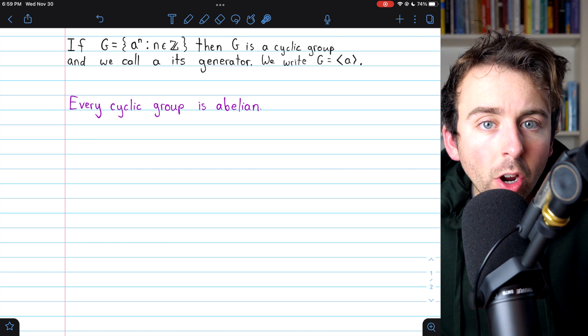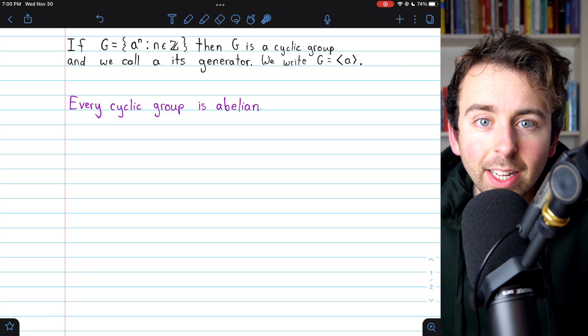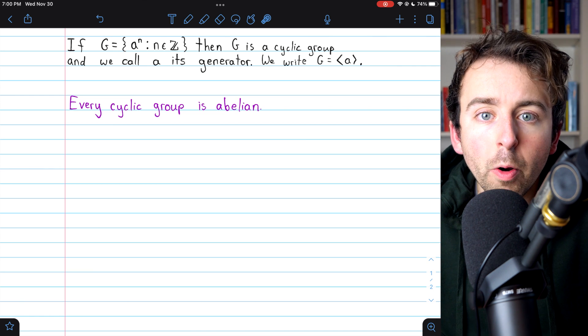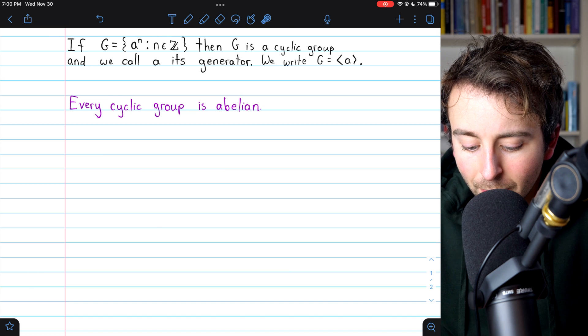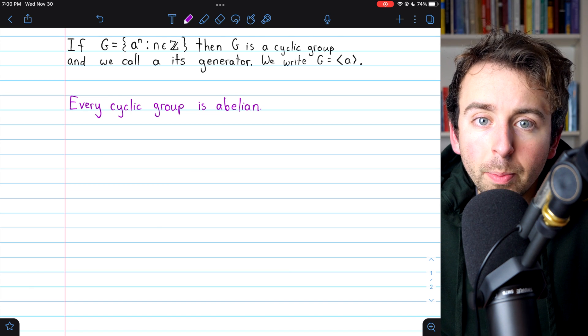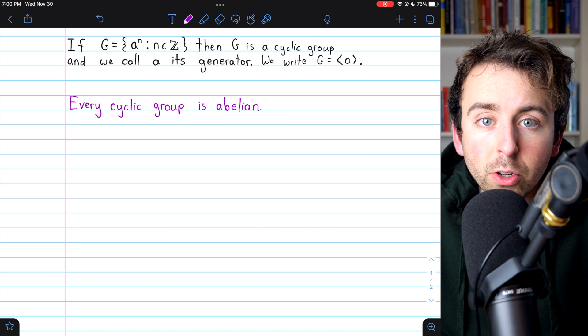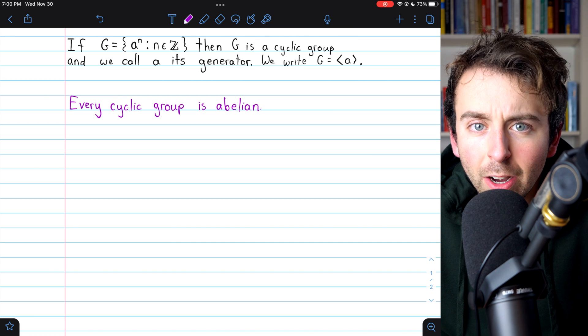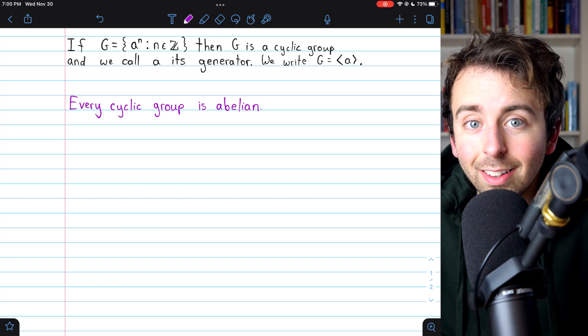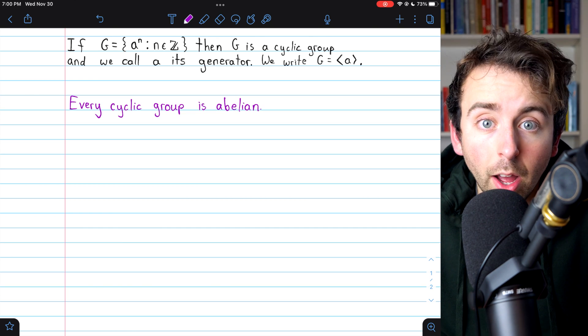So if we want to show that a cyclic group is abelian, we need to take two arbitrary elements from the group and show that they commute. To take two arbitrary elements from a cyclic group, we could just take two arbitrary powers of the generator, because everything in a cyclic group is a power of the generator.